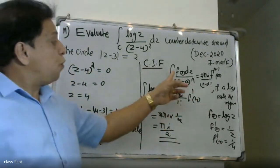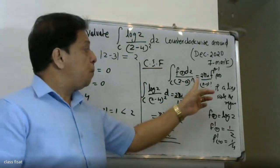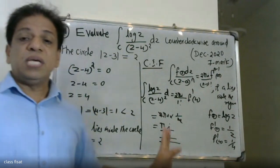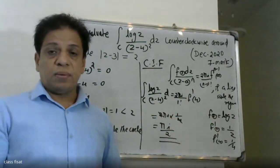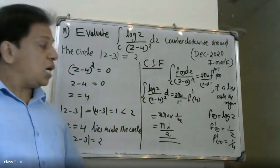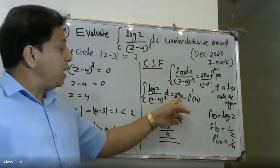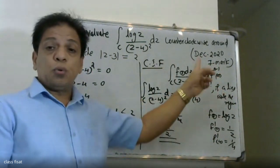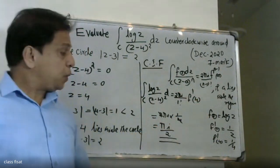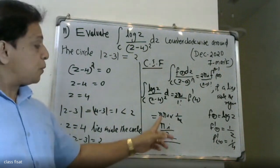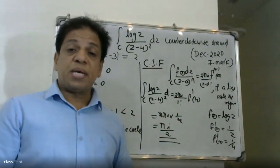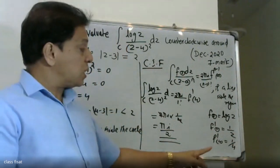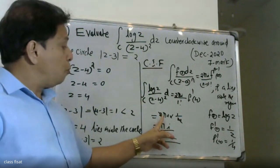Cauchy's Integral Formula: integral of C f(z) dz equals 2πi divided by (n minus 1) factorial, times f raised to (n minus 1) at a, inside the region. This gives 2πi divided by 1 factorial, times f dash evaluated at 4. f dash is 1/z, so f dash at 4 is 1/4. Therefore: 2πi times 1/4.